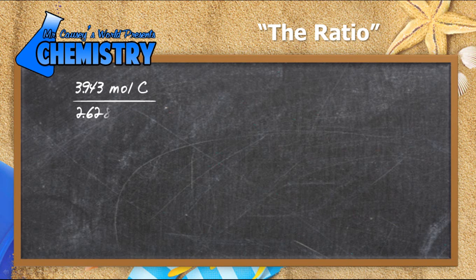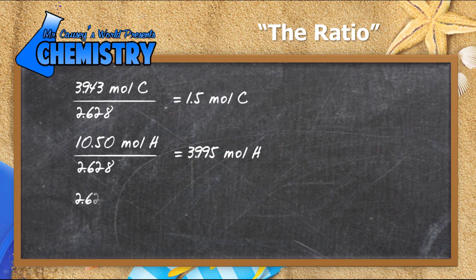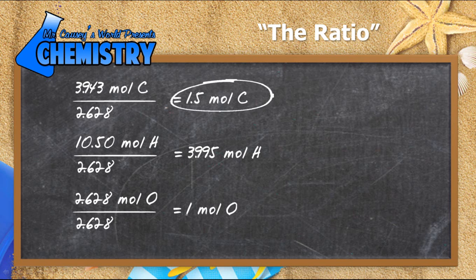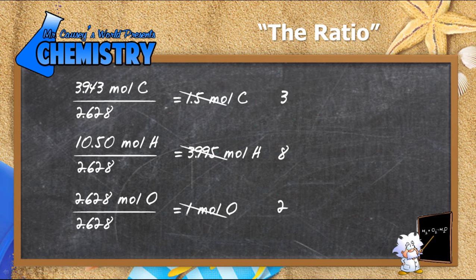So that'll give us 1.5 moles of carbon and that'll give us 3.95 moles of hydrogen and of course one mole of oxygen. But we have a little bit of a problem there. 1.5 moles of carbon, we want these all to be whole numbers. So what we can do is just multiply by 2 and multiply everything by 2, and that'll give us 3 carbon, 8 hydrogen, 3.995 that's pretty much just 4 and 4 times 2 is 8, and then 2 moles of oxygen.